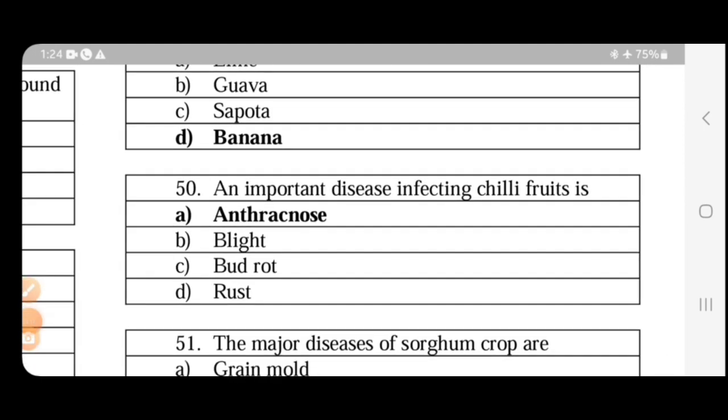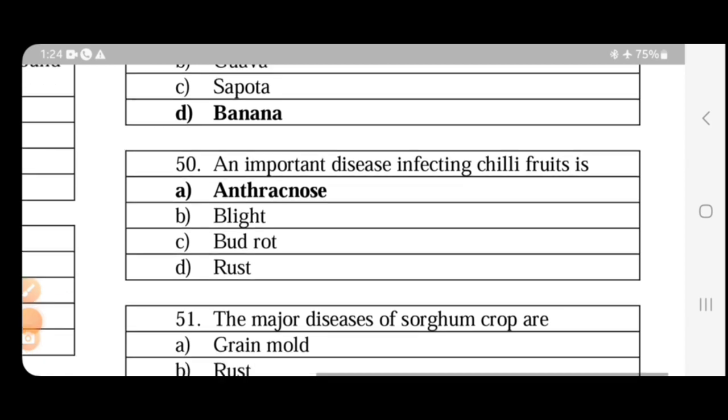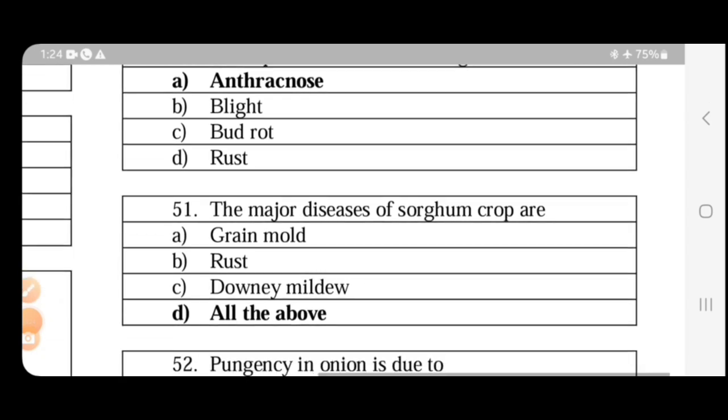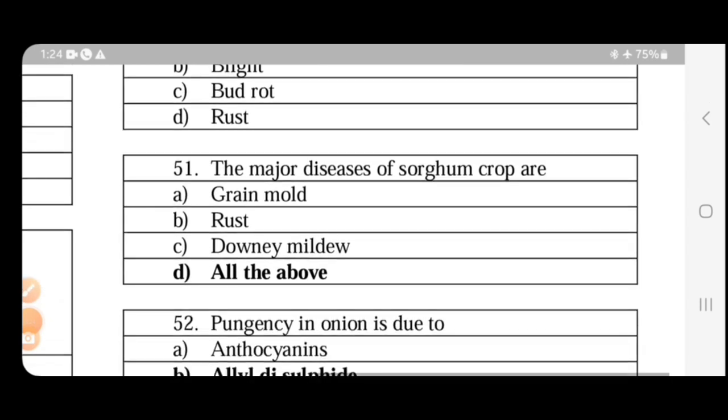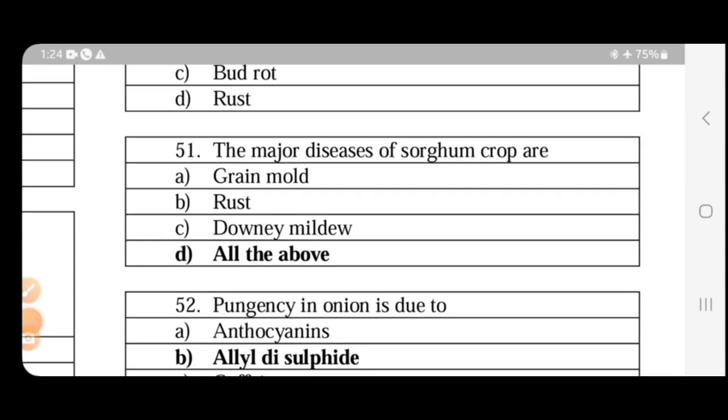An important disease infecting chili fruits is anthracnose. Next, the major diseases of sorghum crop are grain mold, rust, and downy mildew. Causal organisms: downy mildew is Peronosclerospora, rust is Puccinia purpurea, grain mold is Aspergillus and Fusarium species. These are the most important diseases.